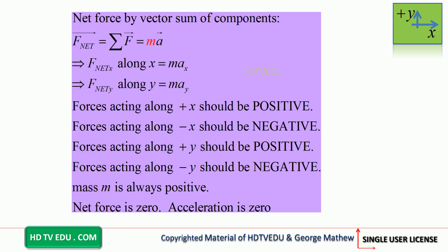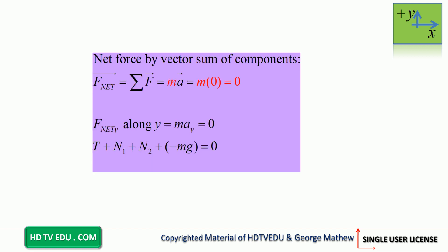By vector sum, forces along positive x should be positive, negative x should be negative, positive y should be positive, and negative y should be negative. We don't have to worry about positive x and negative x since we are told to ignore horizontal components. Since net force is zero, we only worry about vertical forces. Tension, N1, and N2 are all positive y. Gravitational force is negative. So the equation is T plus N1 plus N2 equals mg.